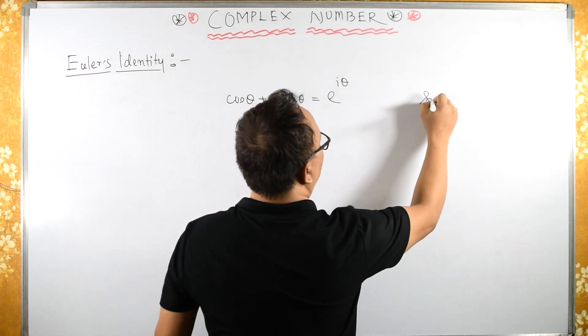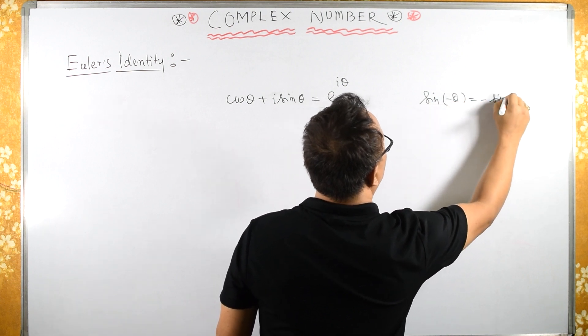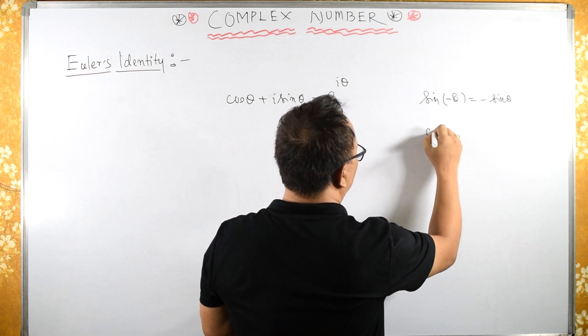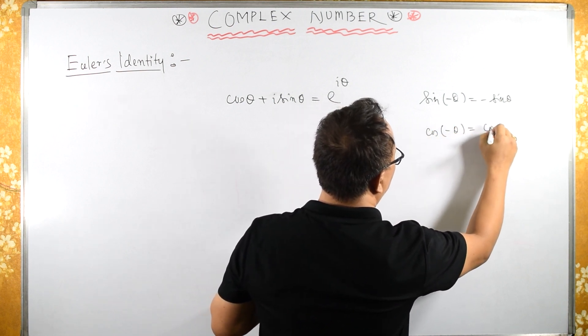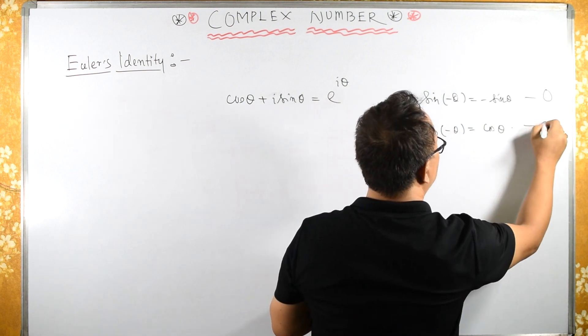We know that sin of minus theta is minus sin theta, which means this is an odd function. And cos of minus theta is cos theta, which means it is an even function.